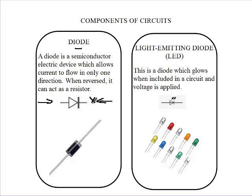If you see a circuit where the diode has been turned around, it is telling you that no current can pass through the diode. But if the circuit has current coming from the base of the triangle through the apex of the triangle, then current will pass through this circuit.